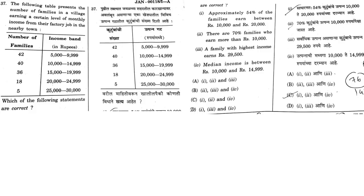Moving on to the next question. The following table presents the number of families in a village by earnings. There are 141 families total. For Statement 1 — approximately 54% of families earn between 10,000 and 20,000. Checking: 40 plus 36 families equals 76, divided by 141, which comes to approximately 54%. So Statement 1 is correct.